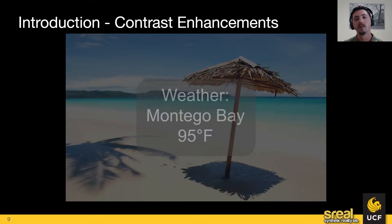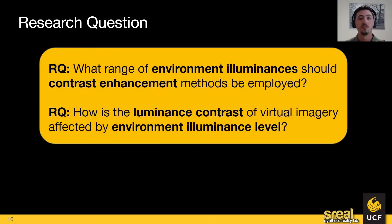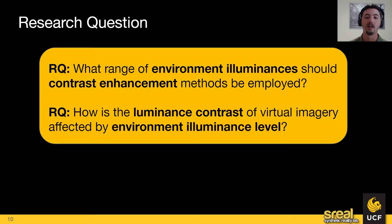We want to work towards adaptive user interfaces for AR devices so we can reach that dream of ubiquitous AR. But in order to do that we need to know exactly what the conditions are in which content starts to become difficult to distinguish — when do we need to use enhancements and adaptive UIs, and when can we use the user's or developer's preferences for that UI's appearance. This led us to two research questions: first, what is the range of environmental luminances in which contrast enhancements should be employed? And second, how is the luminance contrast of virtual imagery affected by environmental luminance level?